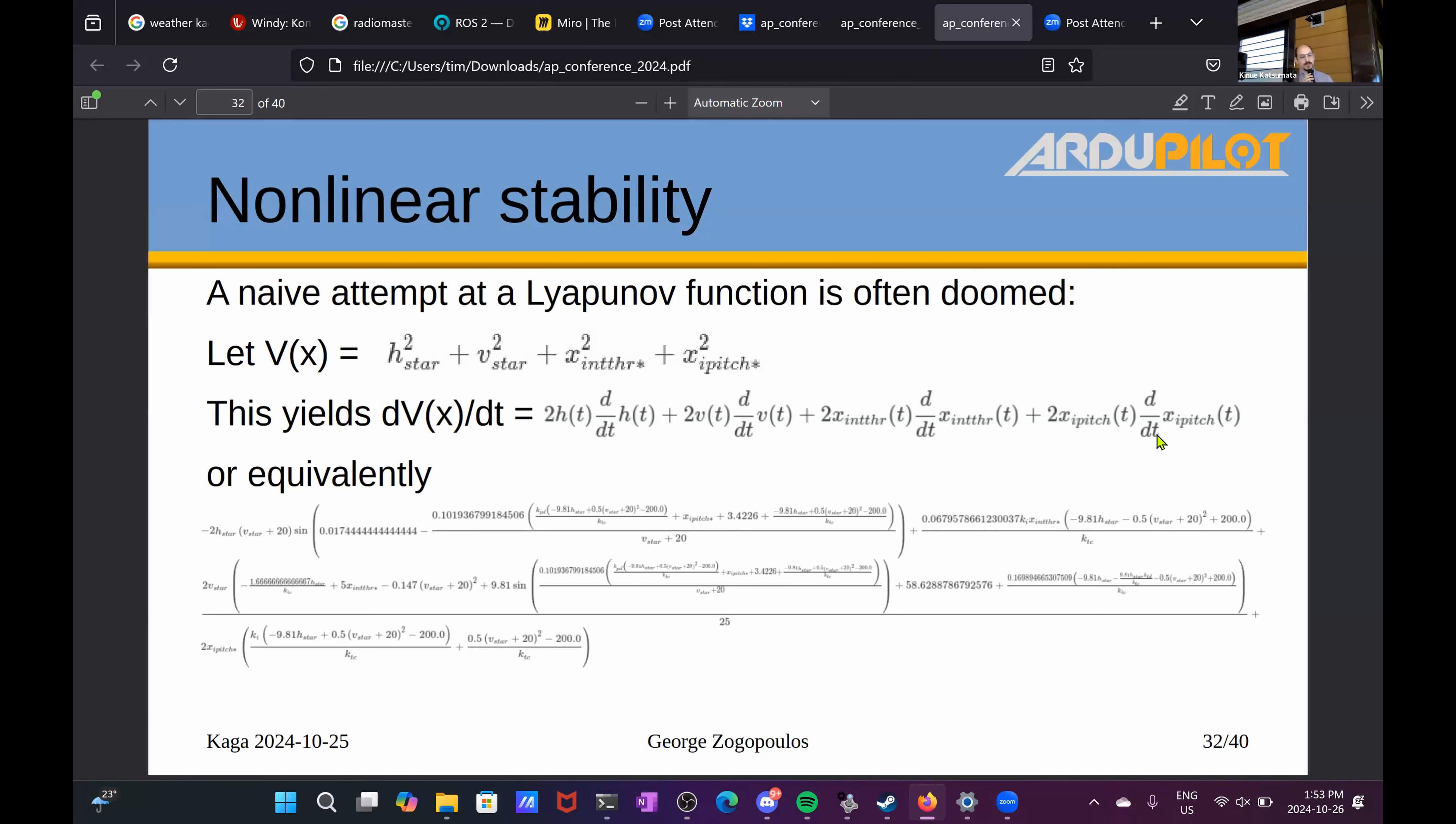So if we use just the sum of the squares of every state of the system as an energy function, that's the most naive approach we can come up with. It yields pretty long expressions, like the one at the bottom. You can't draw any conclusion from that. Like, is this always negative? Who knows?